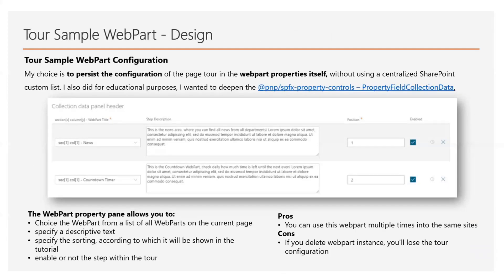Building this sample, I made some implementation and design choices I want to share with you. This web part mainly illustrates how to use and extend with custom render the property field collection data from PnP and SPFx property controls, how to retrieve all SPFx web parts on the current page using PnP.js, and how to include external React components like ReactTour.js. In this solution, my choice is to persist the configuration of the page tour in the web part property itself, without using a centralized SharePoint custom list — for educational purposes, because I wanted to demonstrate the property field collection data property control.